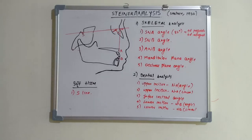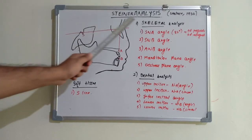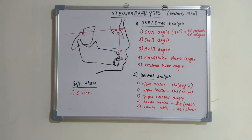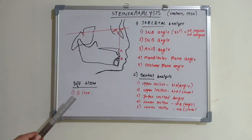Hello everyone, welcome back to another session on Dentistry and More. Today we have a different analysis on cephalometrics - that is Steiner's analysis, put forward by Steiner in 1930. We have seen Down's analysis which had too many measurements, so to make it easier, Steiner put forward a different approach.